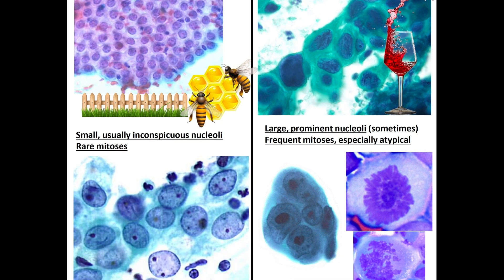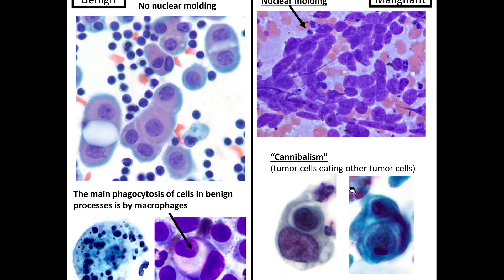So not only nuclear and chromatin features, but we can look at architecture: if it's behaving, it's more benign; more disorderly is a sign of malignancy. Regarding nucleoli, benign processes usually have small or inconspicuous nucleoli and rare mitotic figures, whereas malignant processes have large prominent nucleoli and many mitoses, some atypical. Nuclear molding is typically absent in benign processes but seen in entities like small cell carcinoma, where nuclei crowd and overlap — not socially distancing properly.